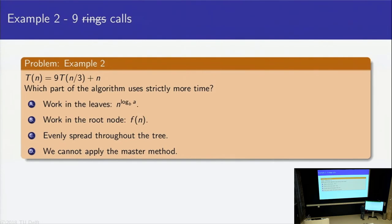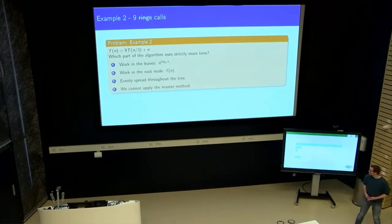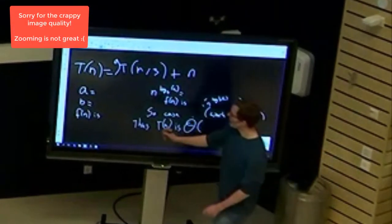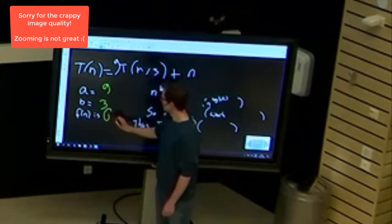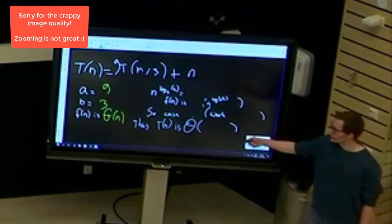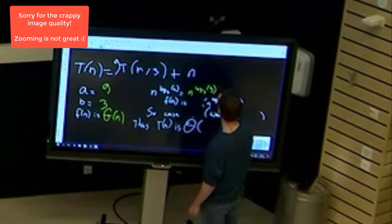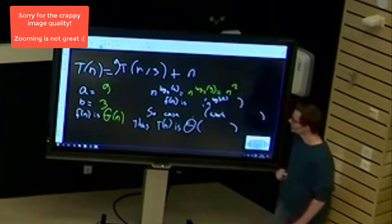Okay, no spread this time. Overwhelming majority for the leaves. Well, let's find out if you're right. So here we go again. a is nine, b is three, f(n) is theta n. Okay, so n to the power log_b of a is n to the power the log 3 of 9, which of course equals 2, so this is n squared.